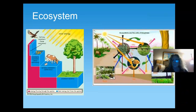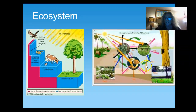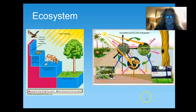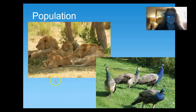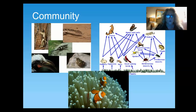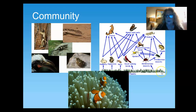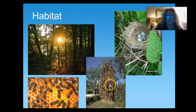Here's a picture of the ecosystem — it's got all the different organisms: the mushrooms, the lichens, the animals, all living together. For population, you've got all of the lions, all of the peacocks — same species. Community is all the organisms living together in the same area, and they are based on a food web or food chain. And we've got all kinds of habitats all over the world.